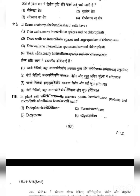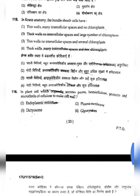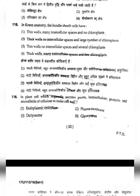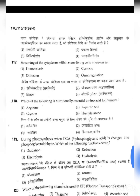Question 116: In plant cells, which organelle secretes packed hemicellulose, proteins, and microfibrils of cellulose to make the cell wall? The answer is dictyosome. In animal cells, the equivalent organelle is the Golgi apparatus; in plant cells it is called the dictyosome, which is also known as the secretory organ. So the correct answer for 116 is dictyosome (option 3).